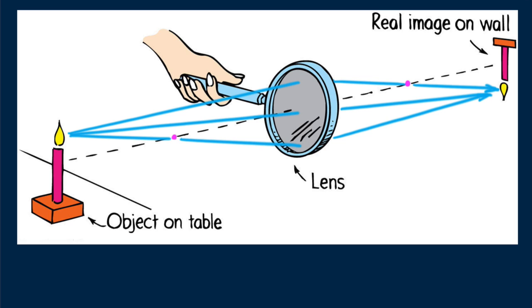And, as said before, when the object is beyond the focal point of a converging lens, a real image is formed instead of a virtual image. The real image of the candle is upside down. Real images with a single lens are always upside down.